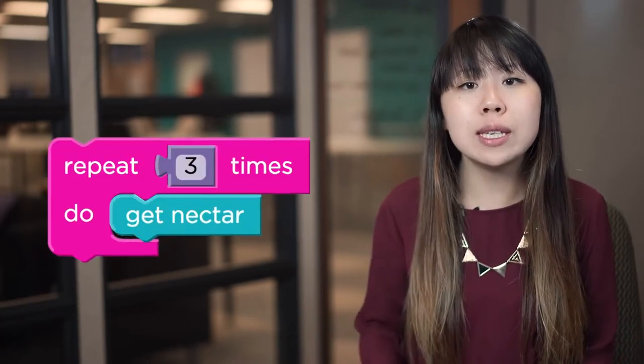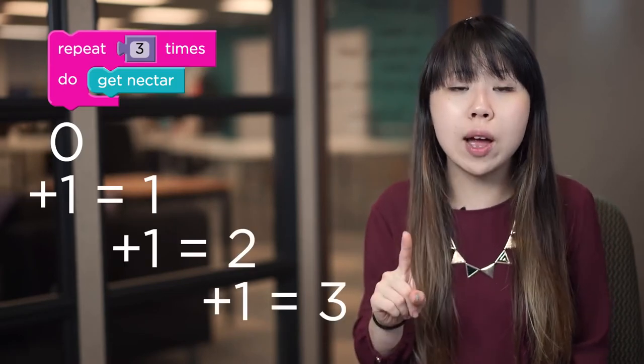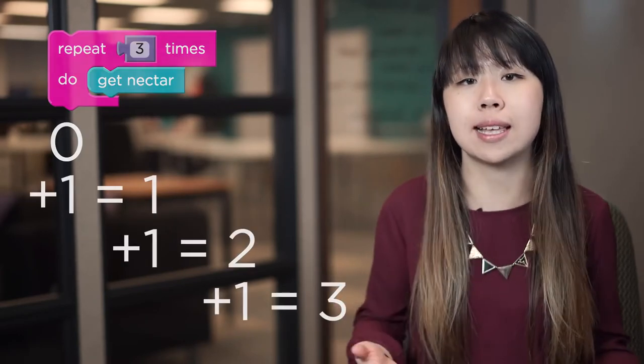So for example, a repeat three block counts from one to three by one, and every time it counts it runs the code inside the loop.